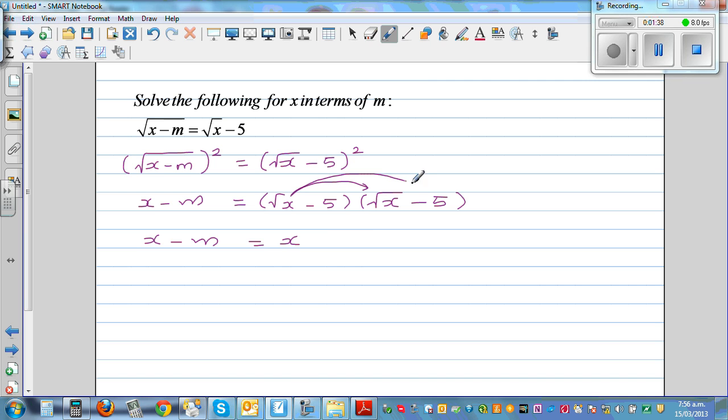Square root of x times minus 5 is minus 5 times square root of x. Minus 5 times square root of x is another minus 5 times square root of x. And minus 5 times minus 5 is plus 25.